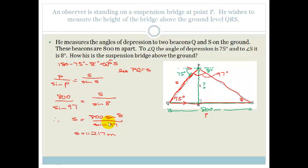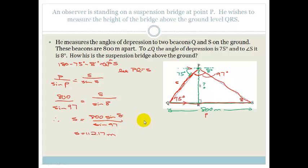Grade 11s, if you're following along and not getting the same numbers, make sure your calculator is on degrees and not radians. There needs to be a little D on the top, not 'rad'. If you've got 'rad' it means you're in radians and you won't get the same answer.